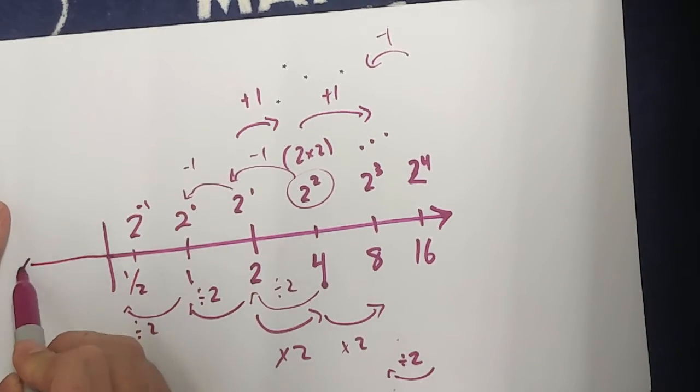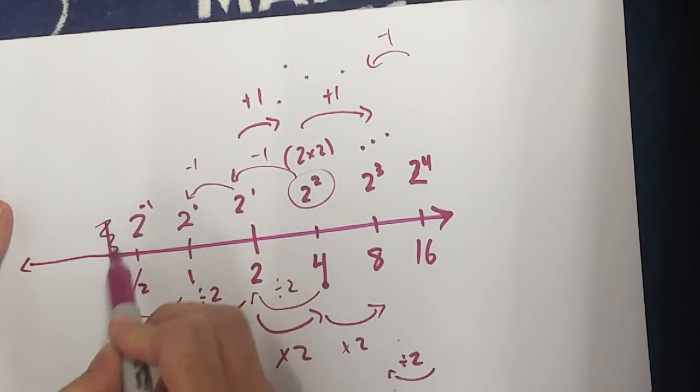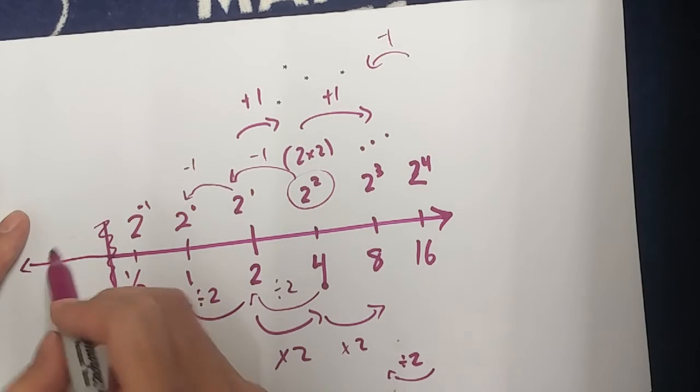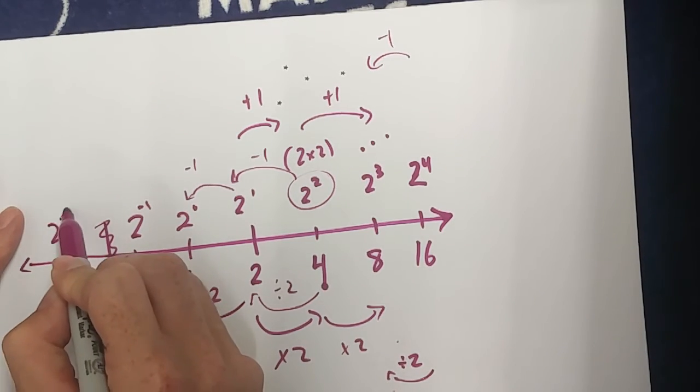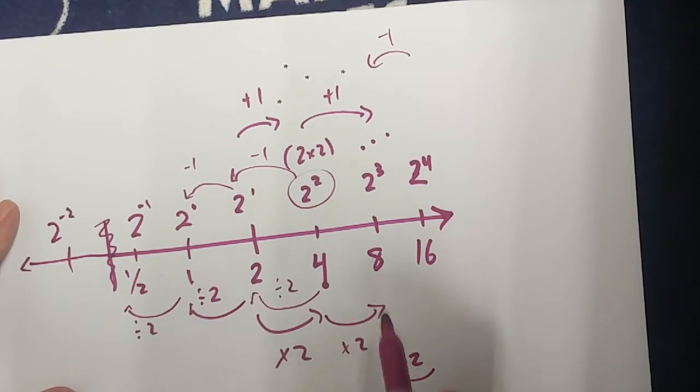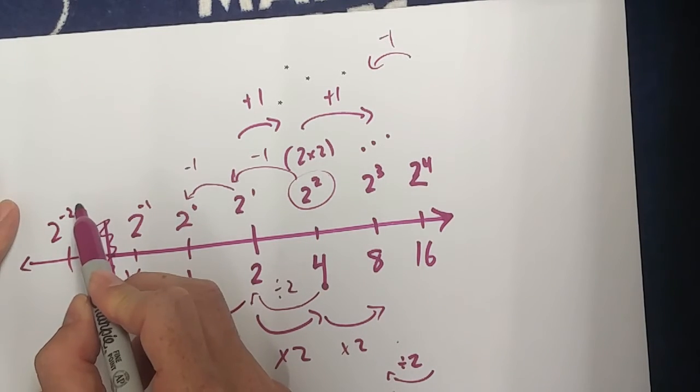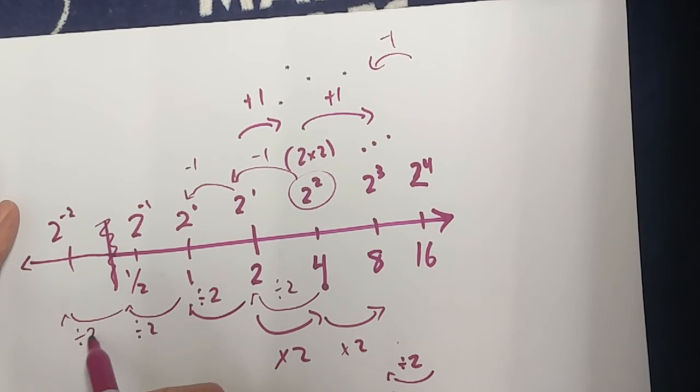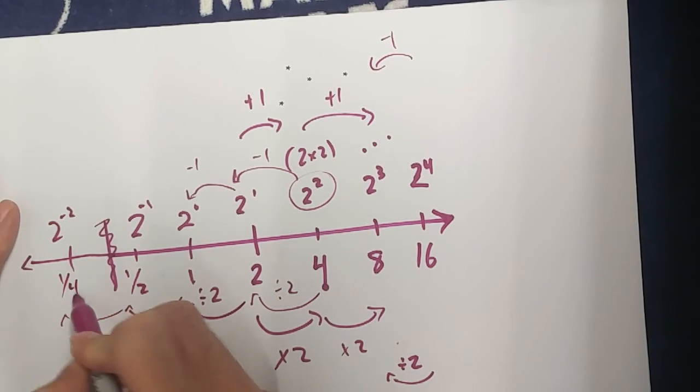And if I chose to keep on expanding this even farther, I can say, what if I have 2 to the power of negative 2? Well, I subtract 1 exponent, which means I have to half my value, divide by 2. So 1 half of 1 half, which is 1 quarter.